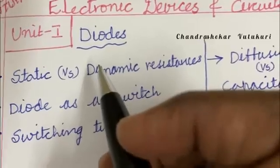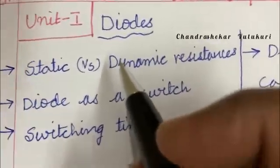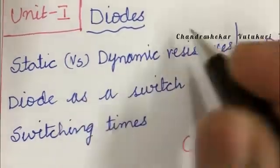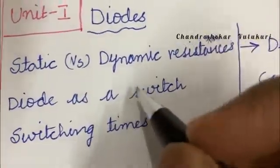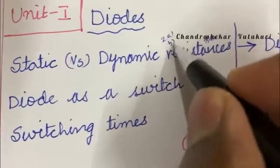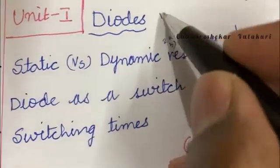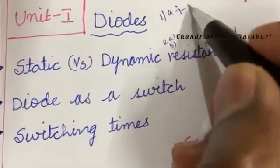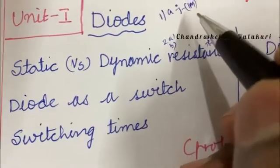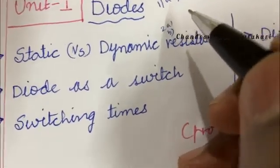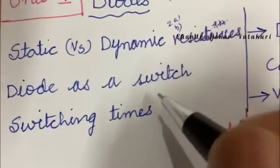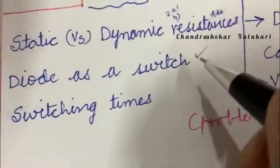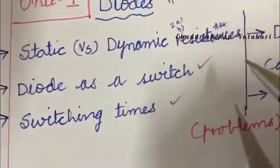The first and foremost gunshot question I can give you from unit one is about static versus dynamic resistance. It may be a direct question in 2A or 2B. Do not skip any part of the video. The first short or long question, diode as a switch, is also the short question. Switching times may also be a short question this time.